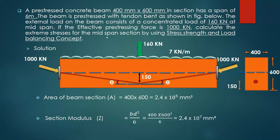Earlier we dealt with problems where only one concept was used — stress concept, strength concept, or load balancing concept. But here we solve the same problem using all three concepts. From the figure: loading is 7 kN/m, concentrated load is 160 kN, eccentricity at center is 150 mm, pre-stressing force is 1000 kN. The cross-section is 400 by 600 mm. We have to calculate the top and bottom stresses at the mid-span section.